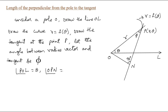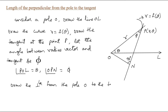The angle OPN is the angle between the radius vector and the tangent, and we take that angle to be equal to φ. We then draw the perpendicular from the pole O to the tangent at the point N, where this represents a 90-degree angle at N.